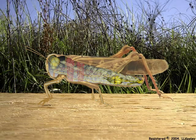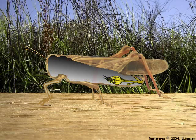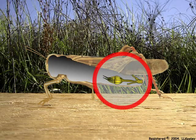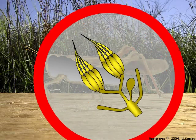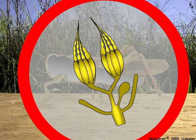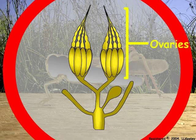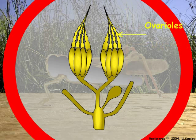Most insects reproduce sexually and lay many eggs. The female reproductive system consists of paired ovaries made up of separate tubules called ovarioles.